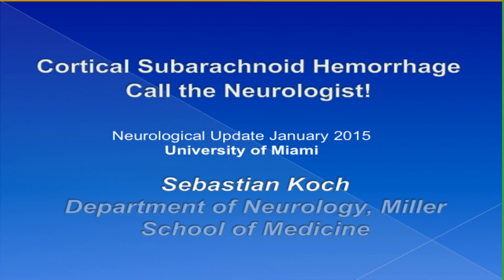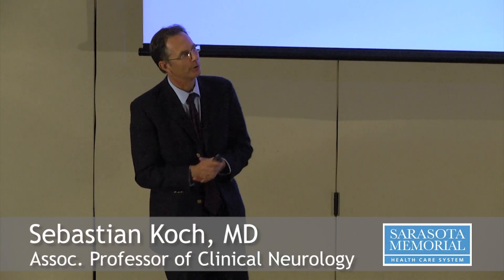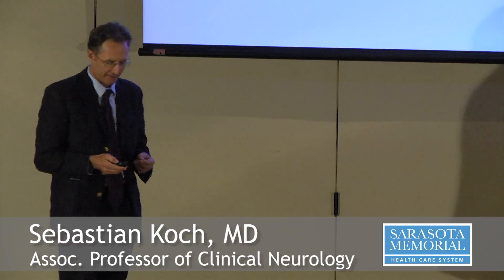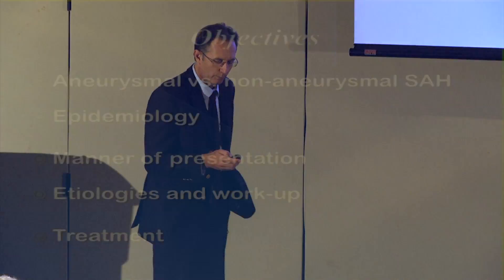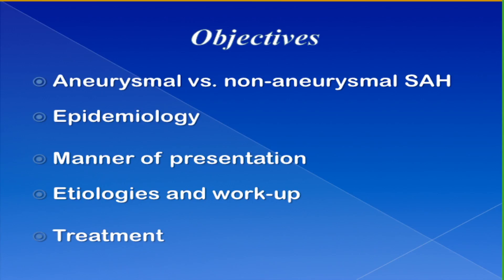I've spoken to you earlier about the most common type of hemorrhagic stroke, which was intracerebral hemorrhage. Now we're going to switch to something perhaps a bit rarer and talk about a specific type of subarachnoid hemorrhage called cortical subarachnoid hemorrhage. We as neurologists have a tendency to disengage from patient care when we hear the term subarachnoid hemorrhage, but in this particular type we are mostly dealing with vascular conditions that we as neurologists are quite familiar with.